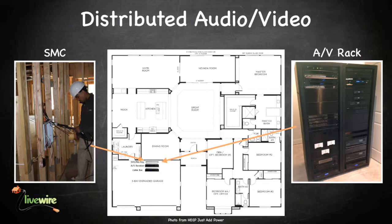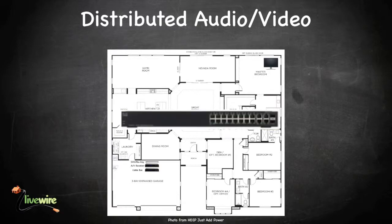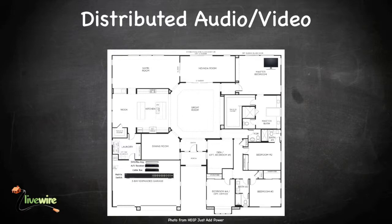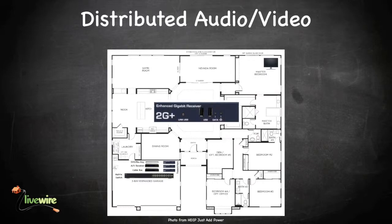This video is going to explain how the signals from each of those source components are distributed throughout the house. For example, how does someone watch a movie in the bedroom when the Blu-ray player is located in the rack downstairs? Within the rack, in addition to the audio video components and power strips, there are devices known as matrix switches and transmitters. In each location in the house where a signal is desired, there is a device known as a receiver or balun.